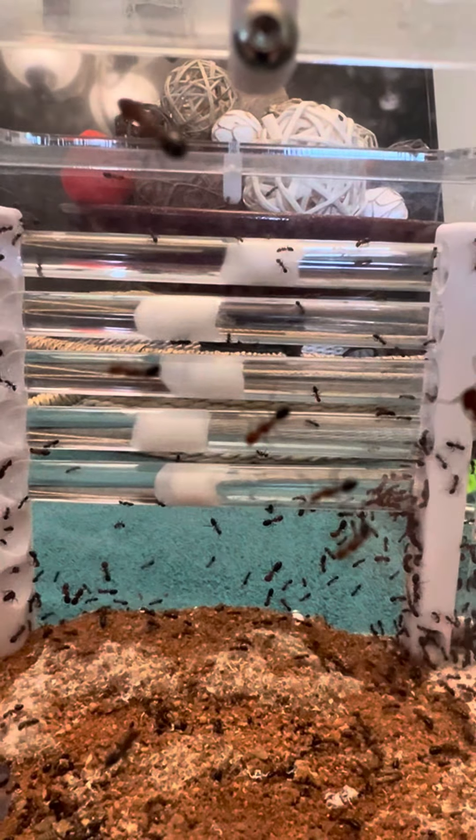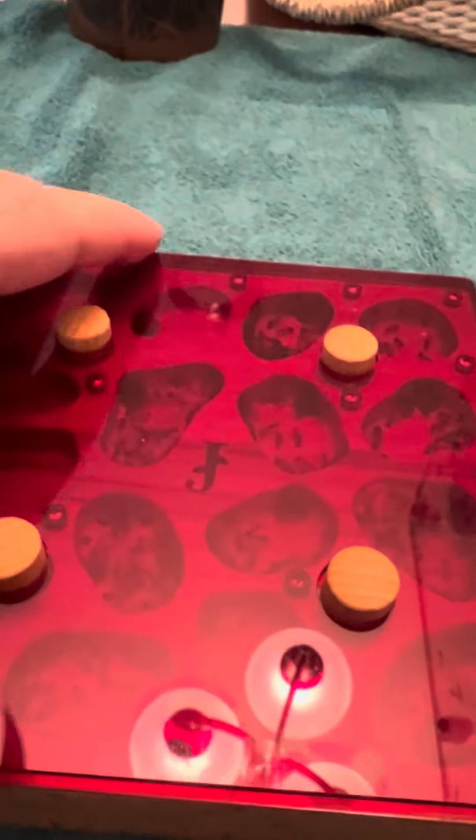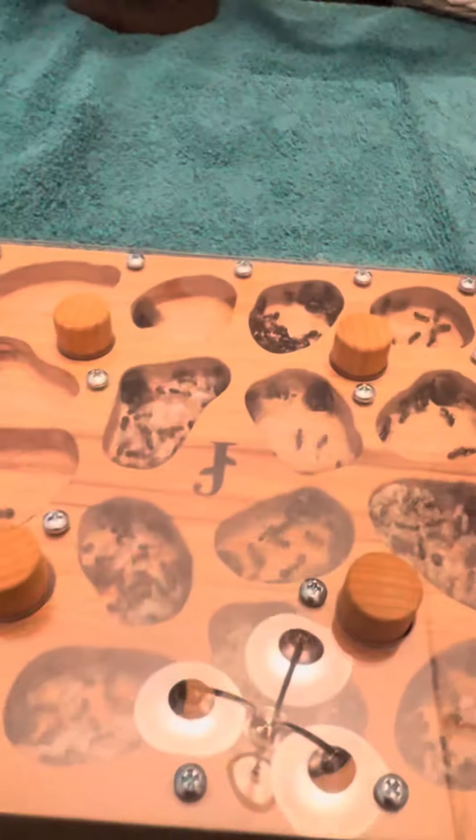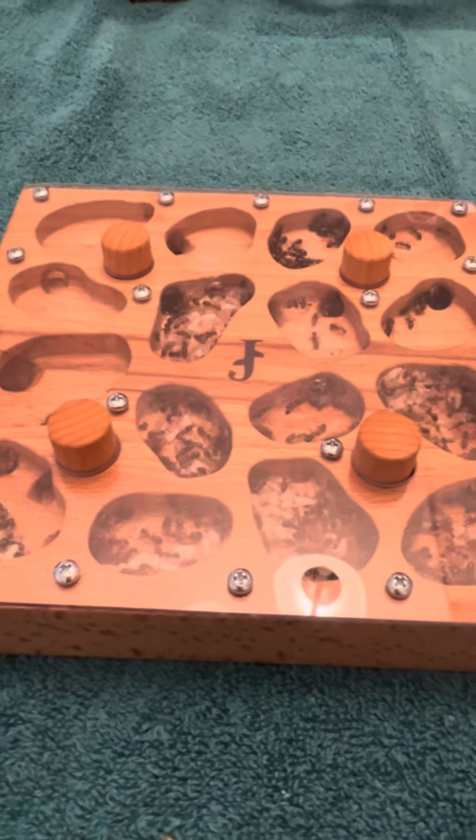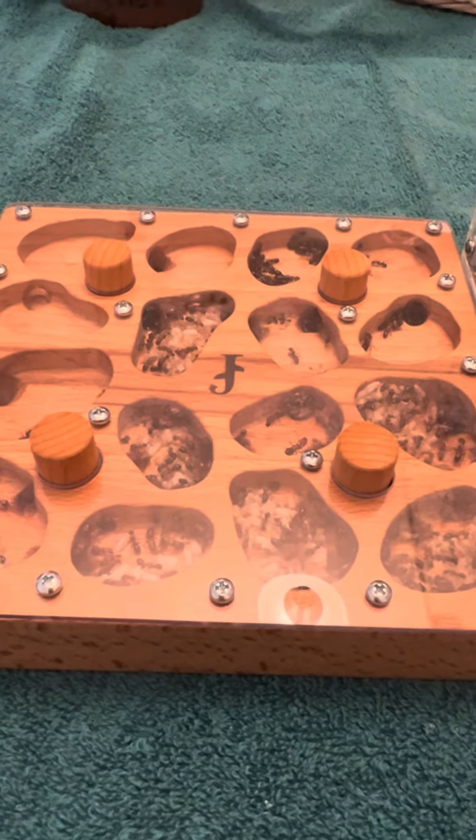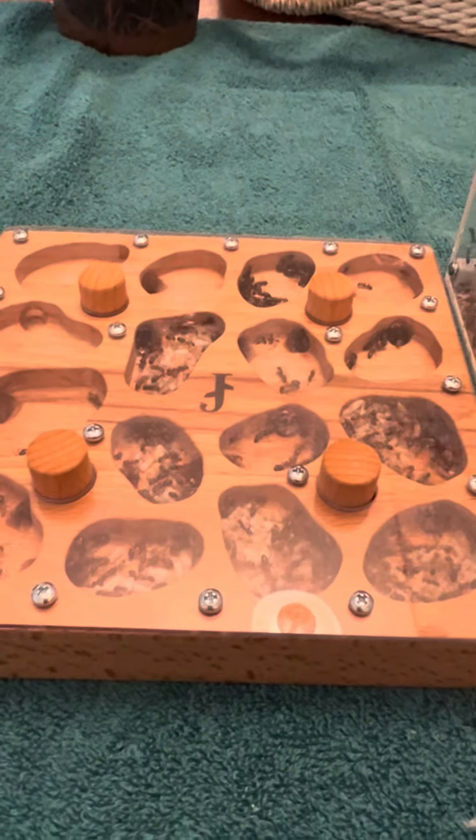These ants are outgrowing this Saturn and I also have this Farento wooden nest attached to it. That has a little bit of room in it but any suggestions for a bigger nest for these?